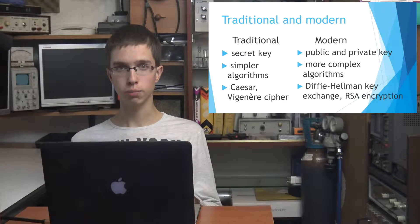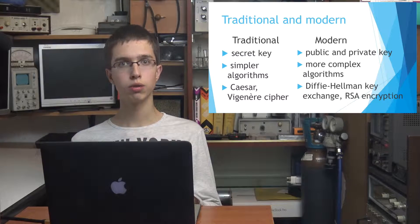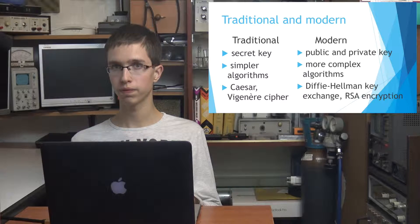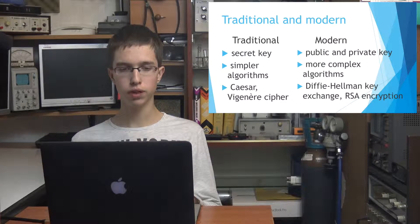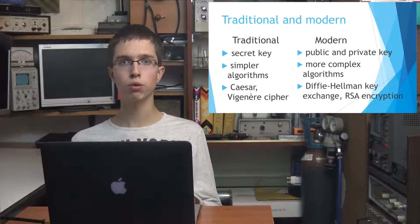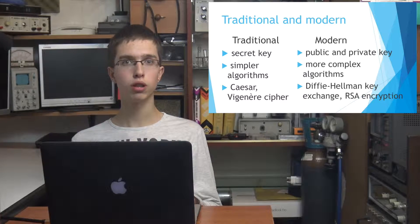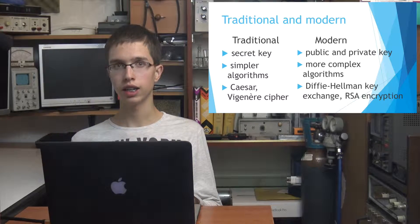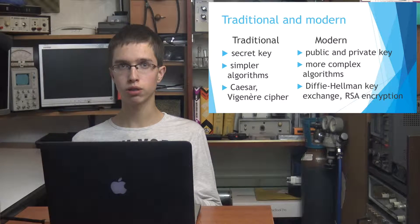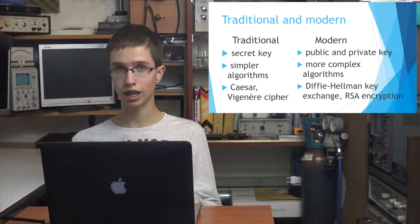However, today people exchange messages with anyone located anywhere in the world, so this way would not be so efficient. In modern cryptography, there are also symmetric keys, but they are not so widespread. There are more complex cryptosystems where more keys are used: a public key which is published publicly, and a private key which is only known by sender and receiver. This is why they are asymmetric. Encryption and decryption processes use different rather than the same key.